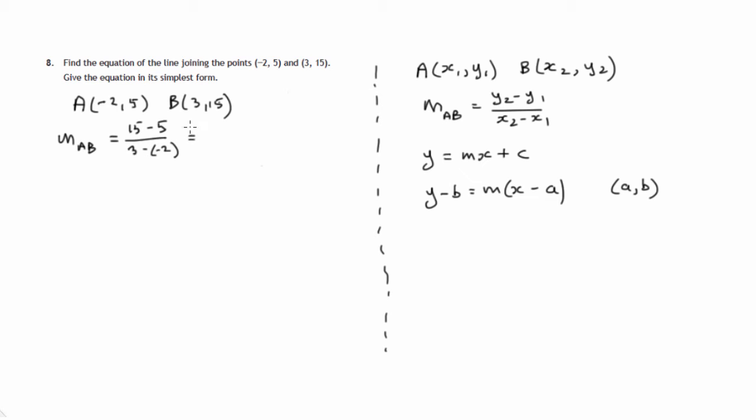The top line is 10. 3 plus 2 — because if you take away a negative — gives 5. So the gradient is 2.